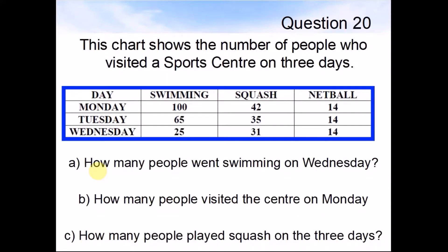Question 20. This chart shows the number of people who visited a sports centre on three days. A: How many people went swimming on Wednesday? B: How many people visited the centre on Monday? C: How many people played squash on the three days? Pause the video and work out the answers.